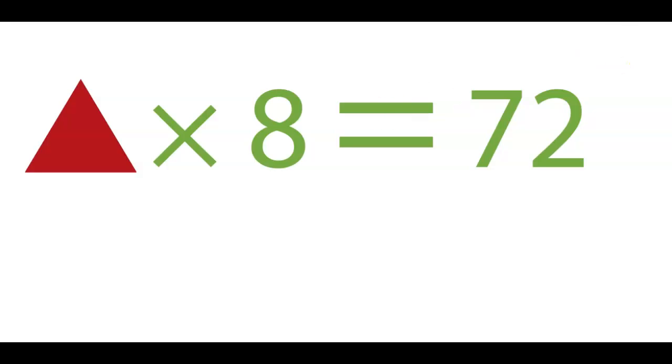And well, the answer, hopefully you thought of in your head, is divide by 8. So in order to undo what was done, we had this triangle, it got multiplied by 8, we need to undo that, we divide by 8. We have to do it to both sides to make the equation equal. We have to do the same thing to both sides.